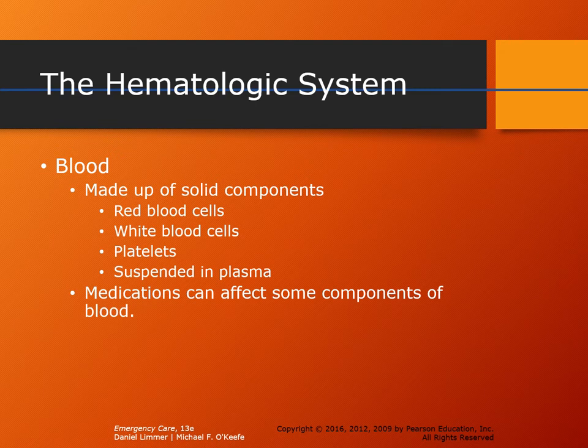Blood is made up of four components: red blood cells, which primarily transport oxygenated blood via hemoglobin; white blood cells, that help fight off infection; platelets, which are our primary source for clotting; and plasma, which makes up the majority of the blood itself.